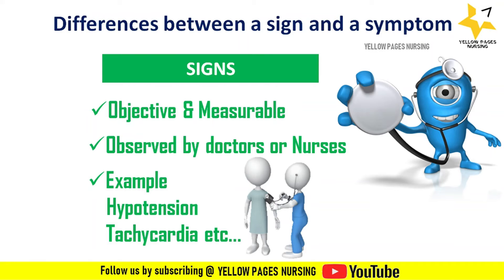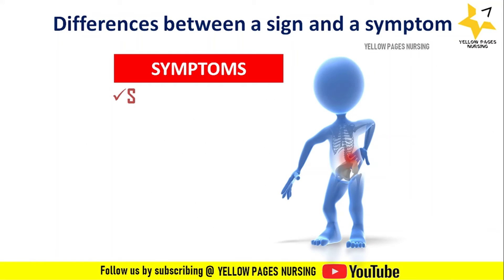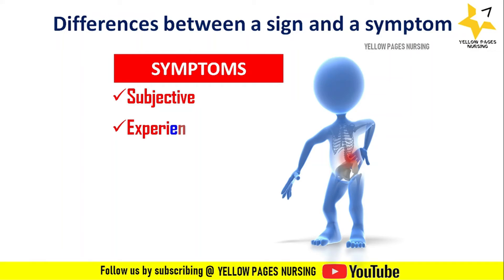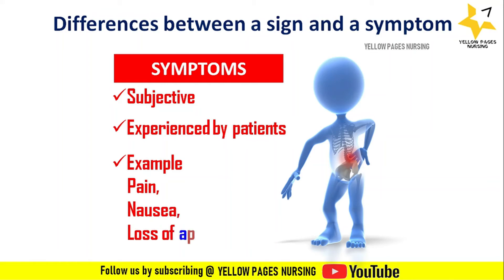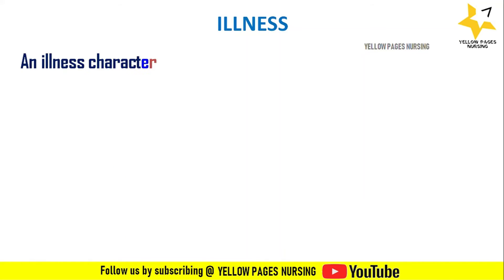On the other hand, symptoms are subjective — they are not physically visible and cannot be verified. A symptom is an effect noticed and experienced only by the person who has the condition. Examples include pain, nausea, shivering, dizziness, and tiredness. The key difference between signs and symptoms is who observes the effect.